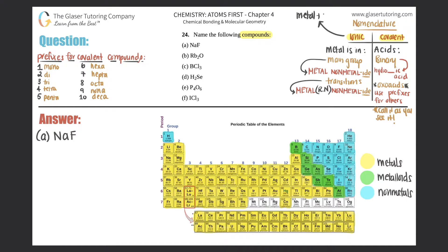Ionic compounds are between a metal and a non-metal; covalent compounds are all non-metals. So if you see at least one metal, it's automatically going to be an ionic compound. Now ionic naming is split into two categories: is your metal a main group metal or is it a transition metal? Your main groups are groups 1 and 2, and groups 13 through 18.